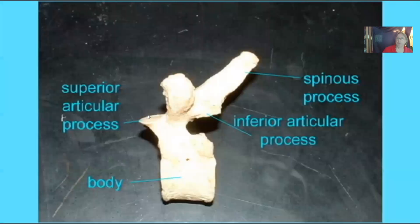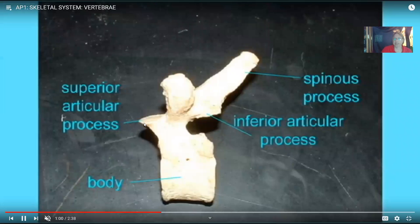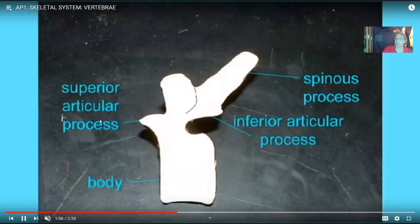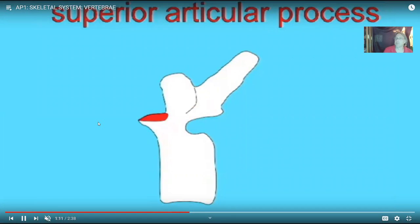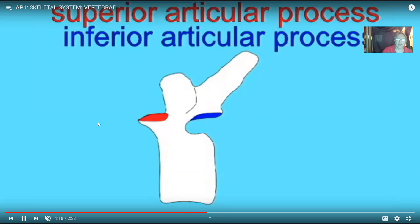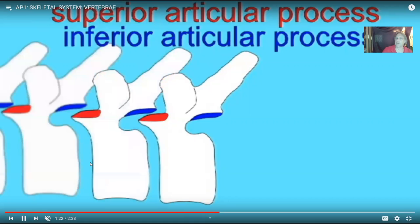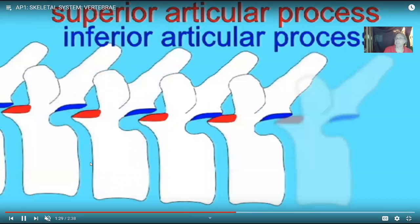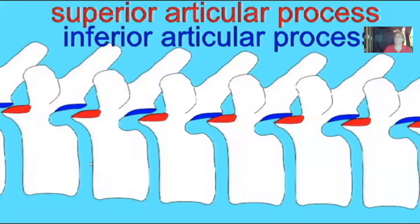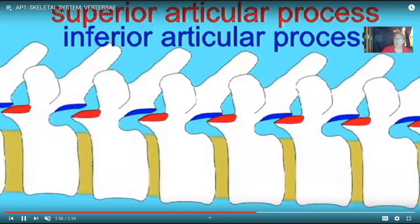Some parts of vertebrae are best seen when multiple vertebrae are put together. For example, there is the superior articular process and the inferior articular process. These exist because vertebrae articulate with the vertebrae on either side of them. The superior articular process allows a vertebra to articulate with the one above it; the inferior articular process allows it to articulate with the one below. When we flex or rotate the vertebral column, there is a gliding of these flat surfaces over each other.